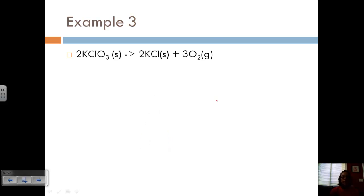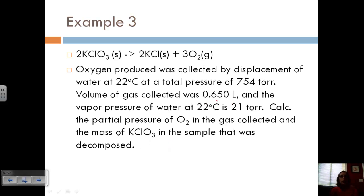Okay, let's look at an example. So we have our reaction of potassium chlorate, and we're breaking it down into potassium chloride and oxygen. So oxygen produced was collected by displacement of water at 22 Celsius at a total pressure of 754 torr. The volume of gas collected was 0.65 liters, and the vapor pressure of water at 22 Celsius is 21 torr. So I'm going to calculate the partial pressure of O2 in the gas collected and the mass of KClO3 in the sample that was decomposed.